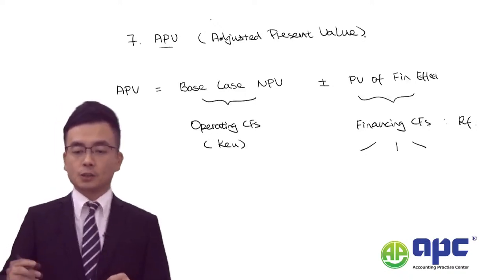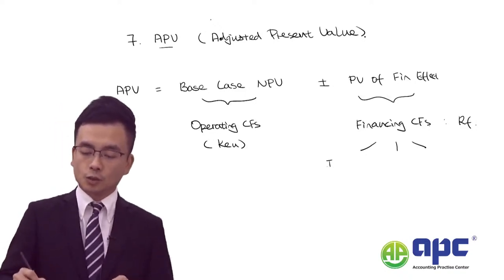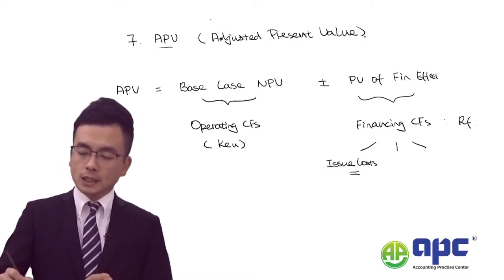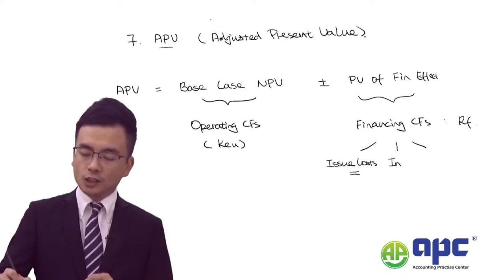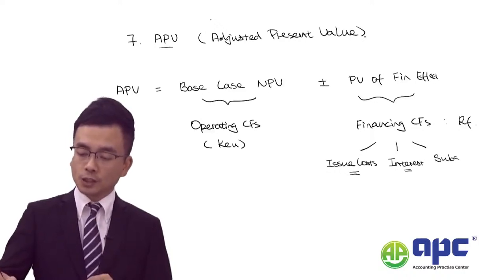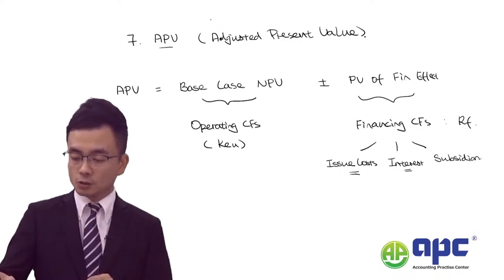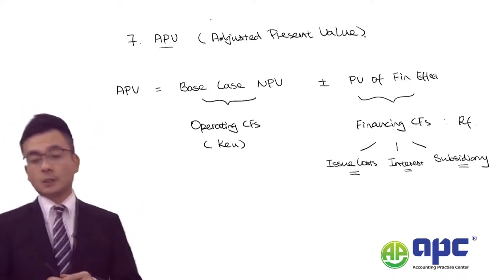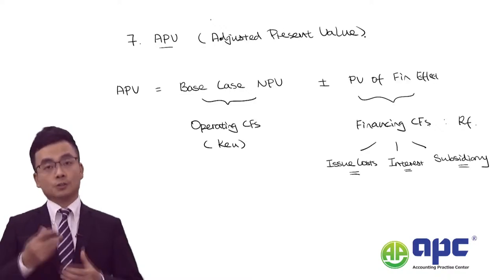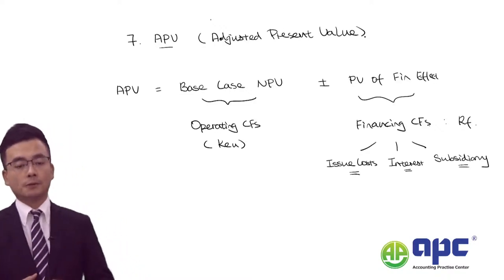From the exam's point of view, there are three types of financing cash flows, discounted at the risk-free rate or the yield of the business's debt. These are: issue costs (if issuing debt, there may be issue costs), the tax saving on interest, and the subsidy — especially if investing in overseas countries where the government gives you lower cost debt.